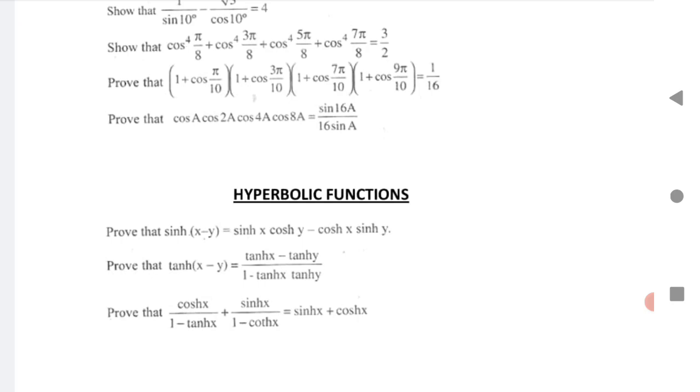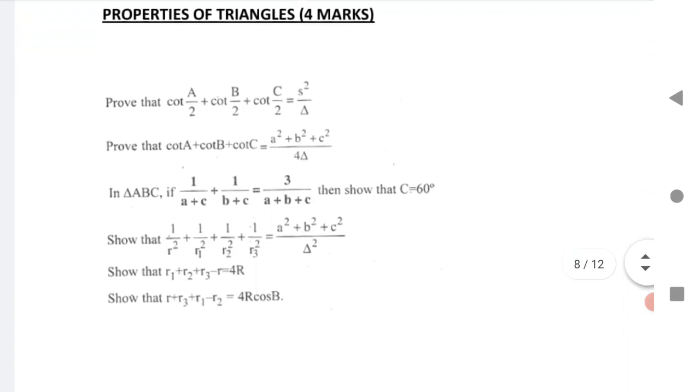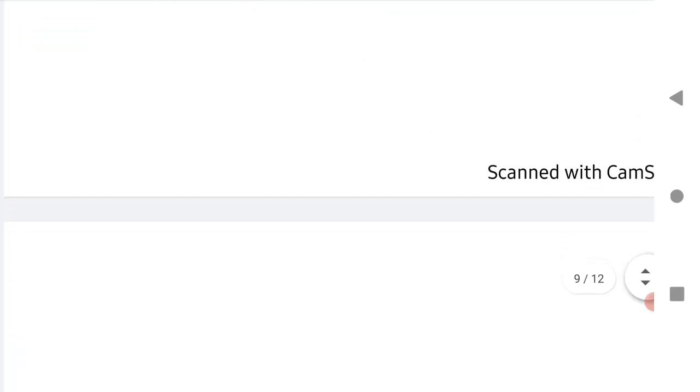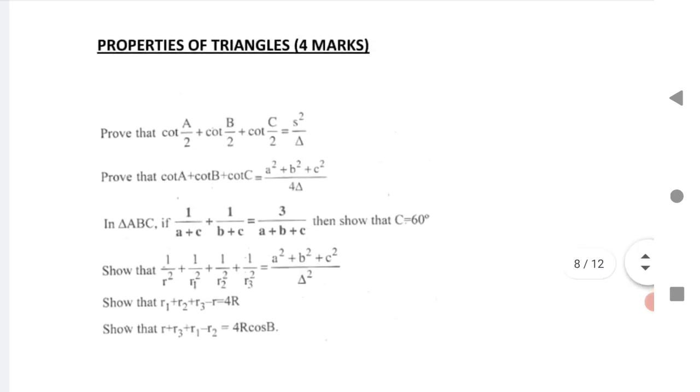Next is properties of triangles, the last chapter for four marks, very important chapter. I have given questions number one, two, three, four, five, six. These are very important. I request students, the blueprint is also given in the description, you can check the blueprint of paper 1A for both the states TS and AP.